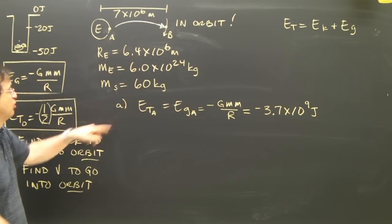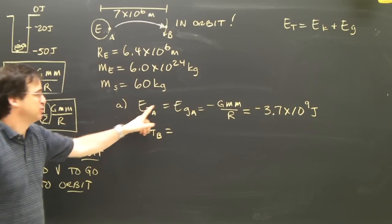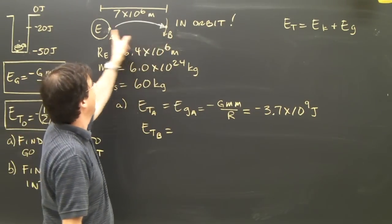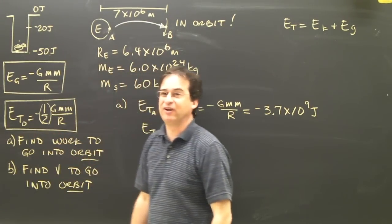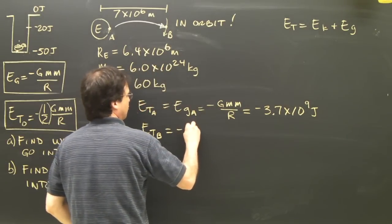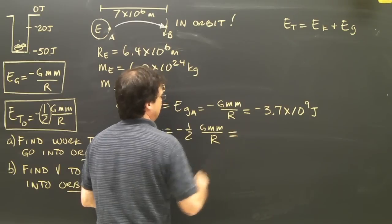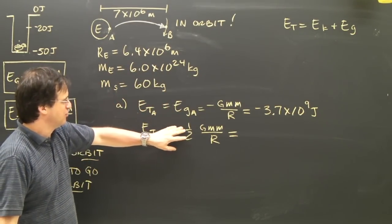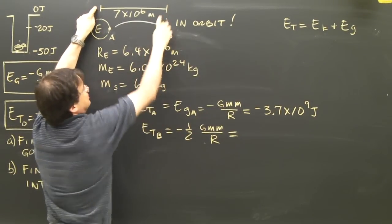Now I need to find the total energy at B. The total energy at A was just the gravitational, because that's the only kind of energy I have. The total energy at B, well, it's in orbit and it has height. So it's kinetic plus gravity. But I've got this great formula here that simplifies everything. If it's in orbit, this is the total energy. So it's going to be negative one-half GMm over r. And keep in mind that the r in this case is this, the radius of orbit, because it's up here now.